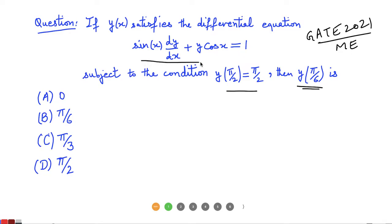Left hand side, the exact differential is d by dx of y sin x. y times derivative of sin x plus x, and sin x times derivative dy by dx, first term equals 1.